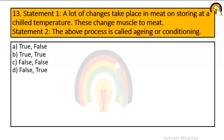Statement 1: a lot of changes take place in meat when stored at a chilled temperature; these changes convert muscle to meat. Statement 2: the above process is called aging or conditioning. Both statements are true, so option B is correct.